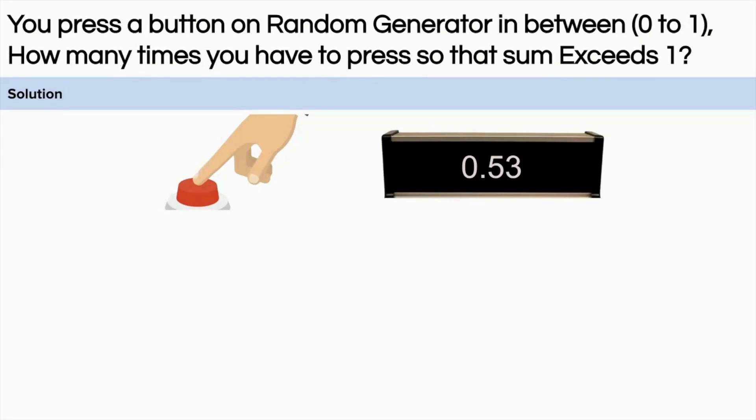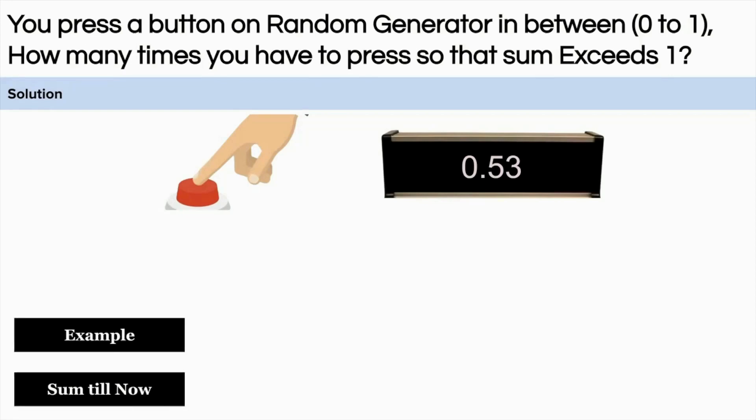I hope you understand the question. Let's understand with the help of an example. Let's assume that there is a random generator. On the first press we got 0.3. On the second press we got 0.53. The sum till now is 0.83, which is still less than 1. On the third press you get 0.6. The total sum is 1.43, which is greater than 1. So here you have used three trials to get the number whose sum is exceeding 1.